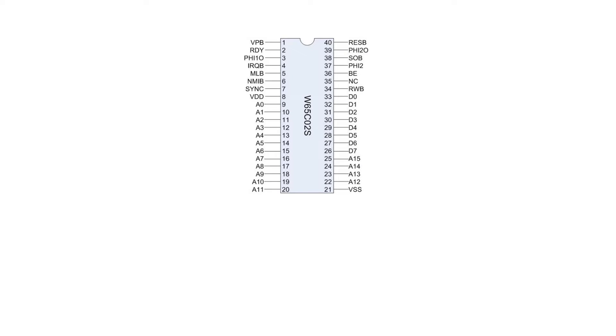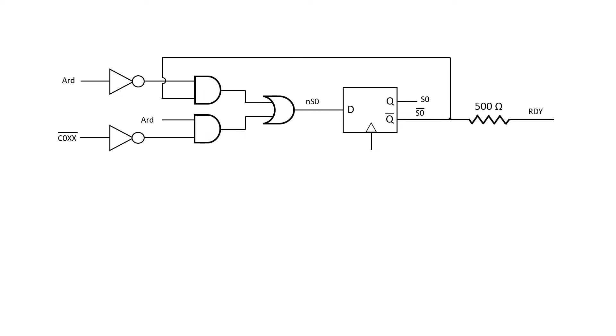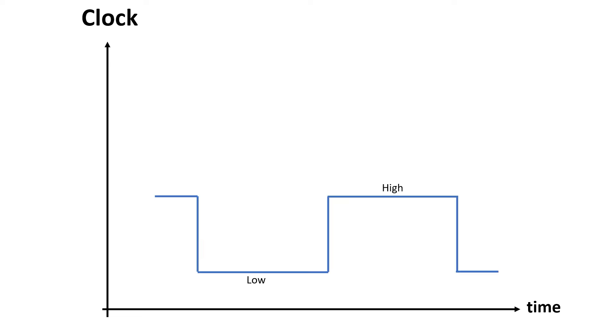But now we have another problem. The ready signal is actually bidirectional, which means that it can be driven or the microprocessor can drive it. To stop things getting ugly, we're going to need a current limiting resistor between S0 bar and the ready signal. That way, if both the flip-flop and the 6502 itself are driving the ready signal, we'll limit the current draw.